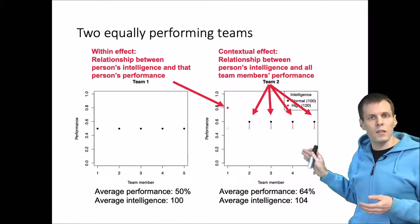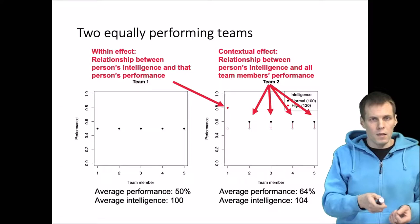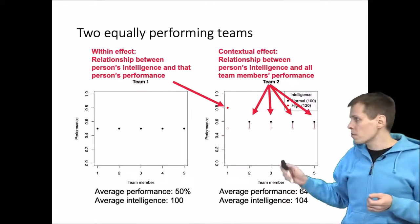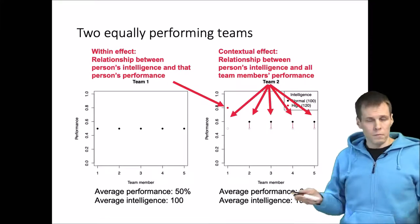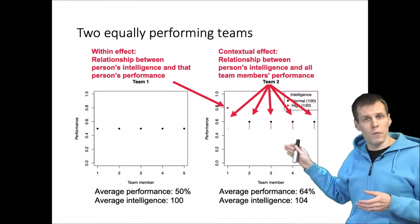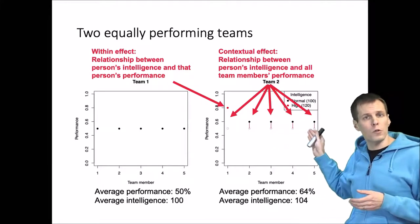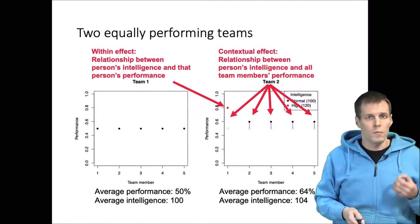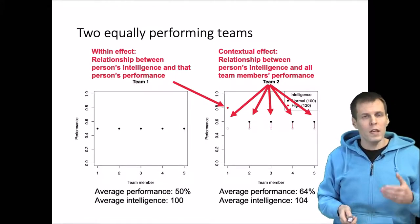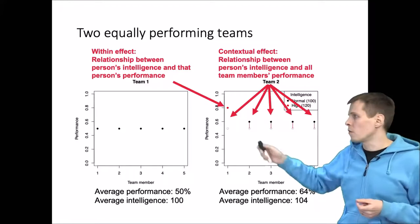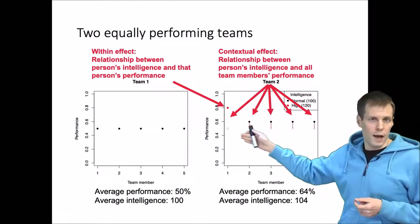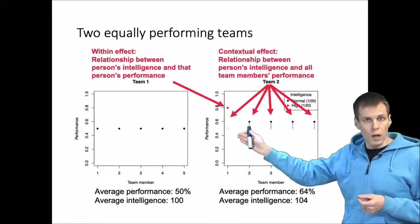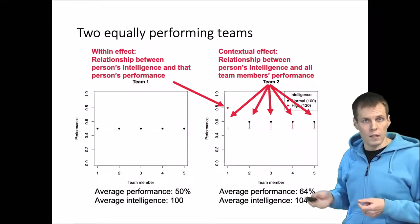The contextual effect is the effect of one's intelligence on everyone else in the team, and of course everyone else includes the smart person. So if we were to change some of these people back to normal people, then the smart person's performance would go down. The individual's performance is the sum of the within effect and the contextual effect, and the contextual effect also affects other members in the team.